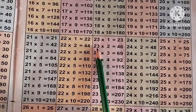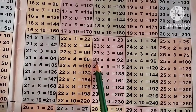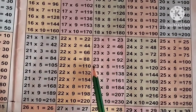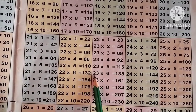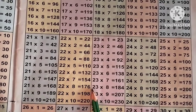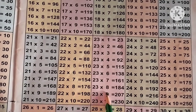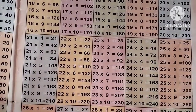Now the table of 23: 23 ones are 23, 23 2s are 46, 23 3s are 69, 23 4s are 92, 23 5s are 115, 23 6s are 138, 23 7s are 161, 23 8s are 184, 23 9s are 207, 23 10s are 230.